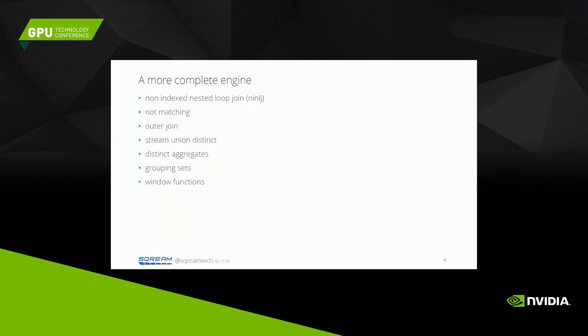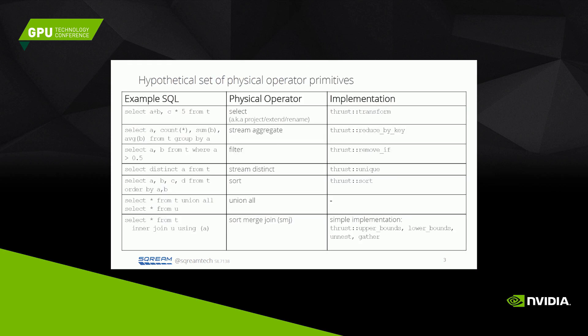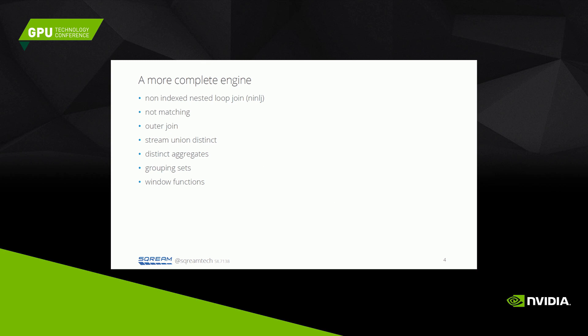The list of operations on the previous slide is a little bit limited for a full-featured SQL engine. Here are some examples of more of the operators that you would need to implement. All of these operators are more or less as simple to implement. For example, the sort-merge join takes more than one Thrust call, but it's only a few Thrust calls put together, and it's still pretty straightforward. Pretty much all of these operators are more or less the same — just a few calls to implement.